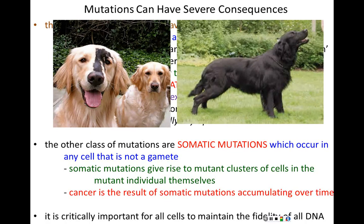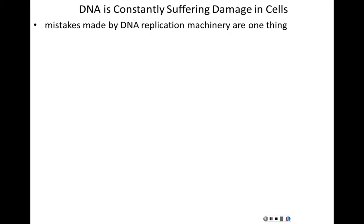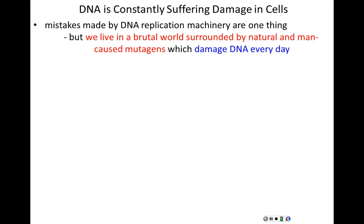Whether germline or somatic mutations, it's critically important for all cells to maintain the fidelity of their DNA sequences. It's a hard world out there for DNA — cells want to keep their DNA mutation-free, but DNA is constantly suffering damage. There are spontaneous mutations due to mistakes by the DNA replication machinery, and on top of that, cells live in a brutal environment surrounded by natural and man-made carcinogens, which are mutagens that damage DNA every single day.